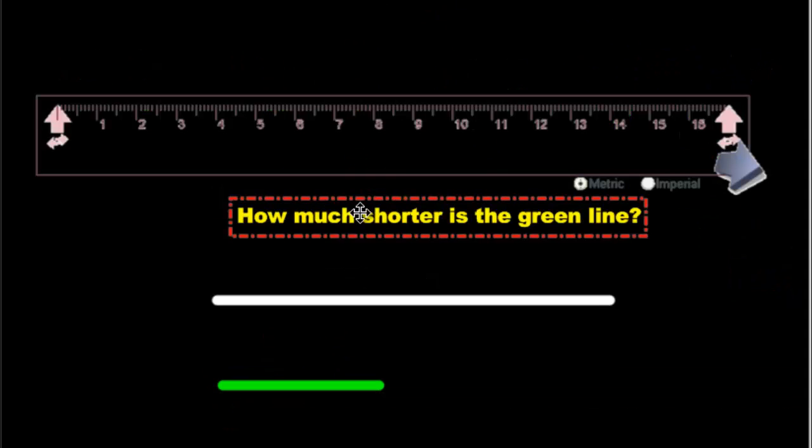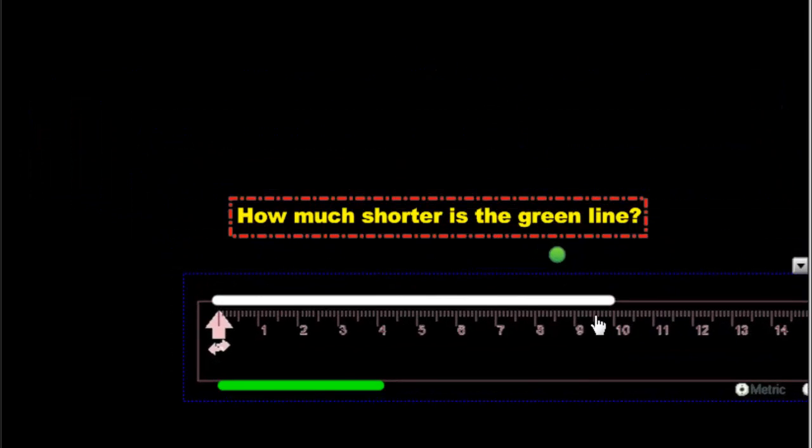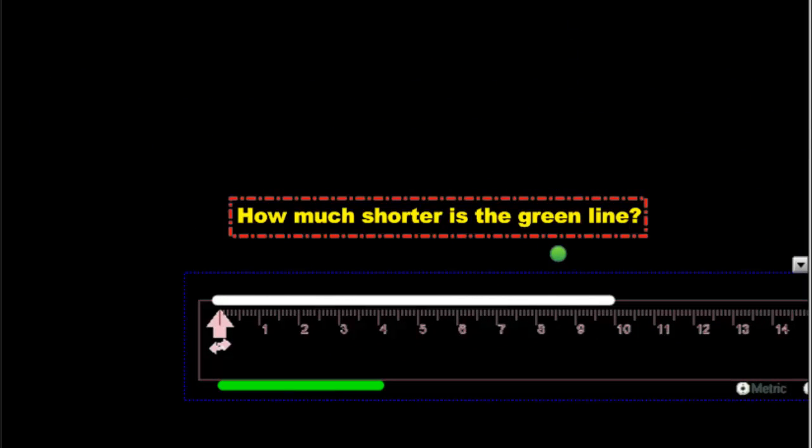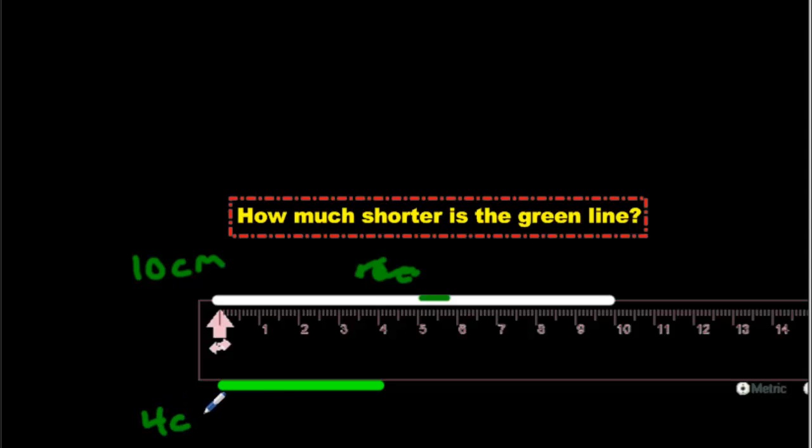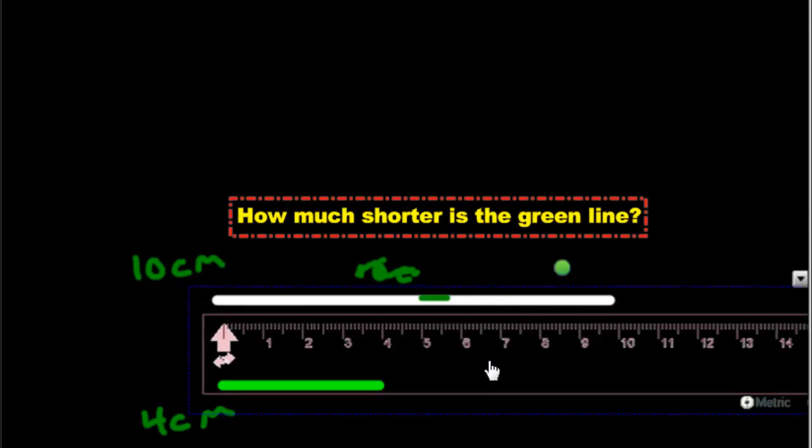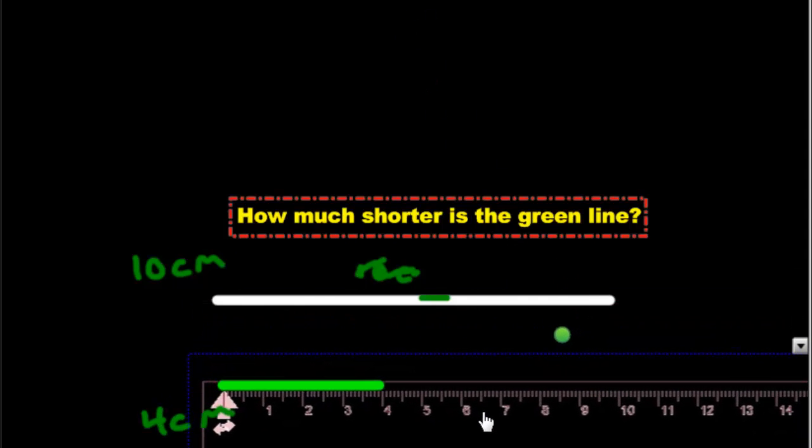On to question 2. How much shorter is the green line? Well, the length's never changed. It's the same line. This is still 10 centimeters. Let's fix that. We'll write 10 centimeters. And the short line is still 4 centimeters. Let's double check it, though, just to make sure. It can never be too certain. Yes, it is 4 centimeters.